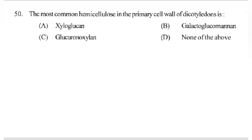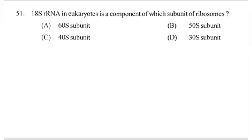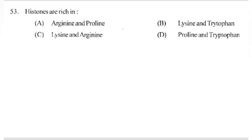The most common hemicellulose in the primary cell wall of dicotyledons is — answer A part: xyloglucan. 18S rRNA in eukaryotes is a component of which subunit of ribosome? Answer C part: 40S subunit. Which of the following is true about telomeres of chromosomes? Answer B part: they seal ends of chromosomes. Histones are rich in — answer C part: lysine and arginine amino acids.